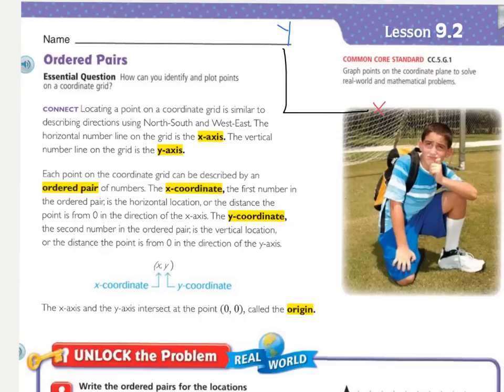Each point on the coordinate grid can be described by an ordered pair of numbers. The x-coordinate, the first number in the ordered pair, so right here they have parentheses, it's x, y. The first number is the x-coordinate. It is the horizontal location or the distance from the point from 0 in the direction of the x-axis.